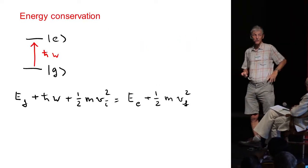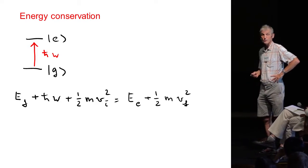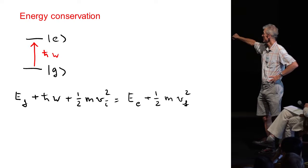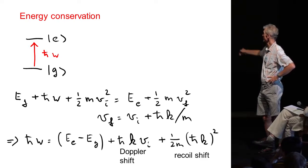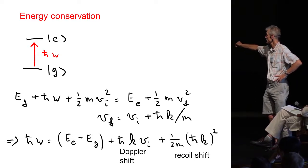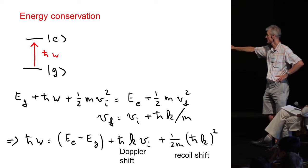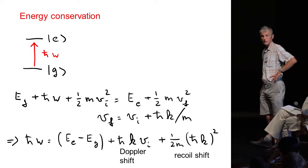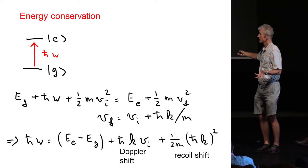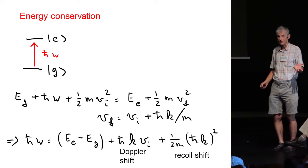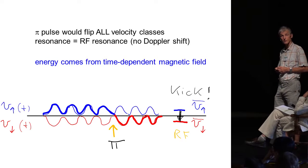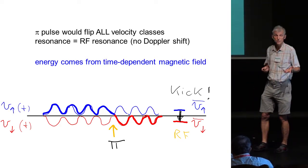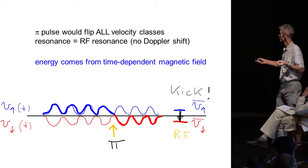One is normally when we drive a transition with a photon the Doppler shift comes from energy conservation. Because if we start in the ground state and have a photon and an initial kinetic energy and then we have an excited state with possibly a different velocity. But if the different velocity is shifted by a recoil then the resonance frequency is not the naked, the bare resonance frequency. There is a Doppler shift and recoil shift. So you would say if you have a momentum transfer you need a Doppler shift due to energy conservation.